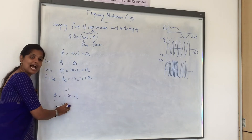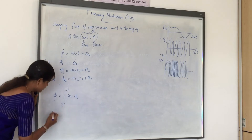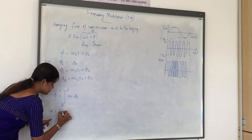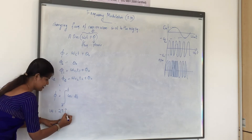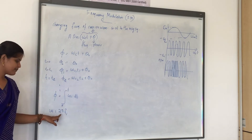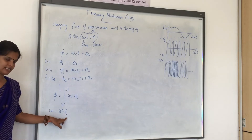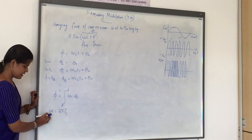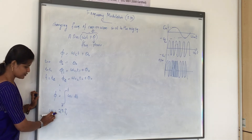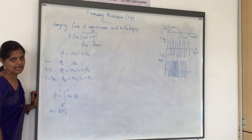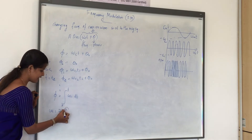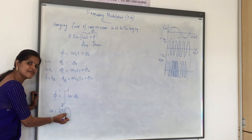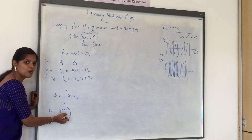ωi is the angular frequency. The formula for ωi is 2πfi — by multiplying 2π with the frequency, we get the angular frequency. Now we need to find what fi is — that is, the instantaneous frequency of the modulated wave.